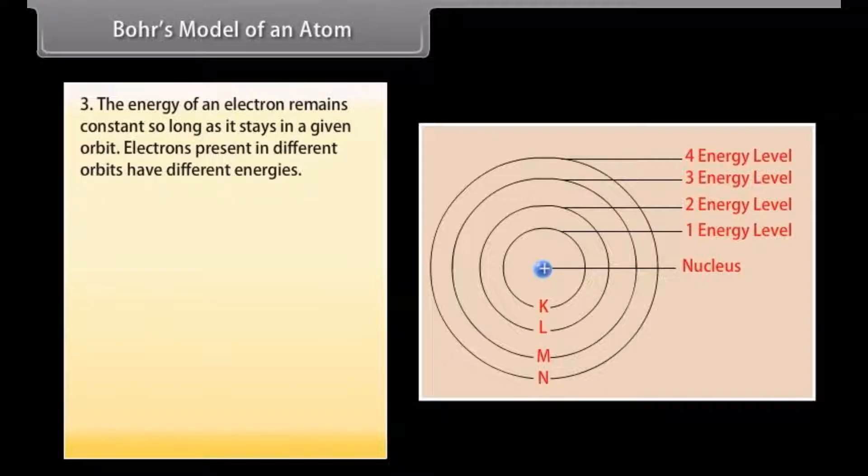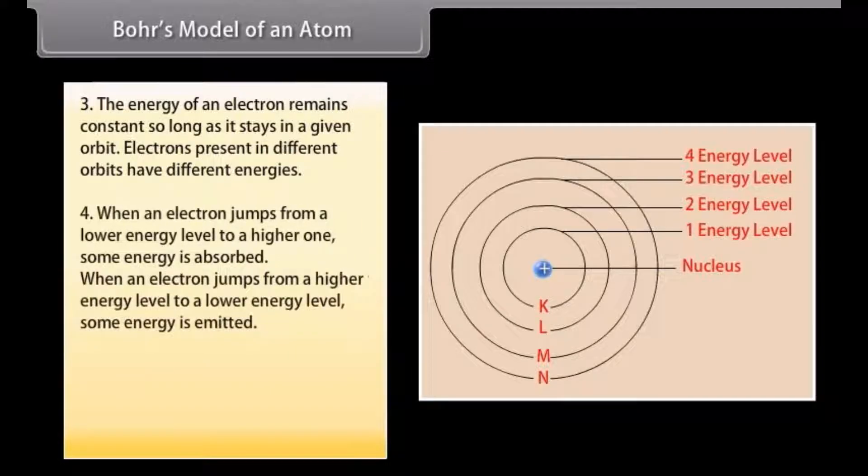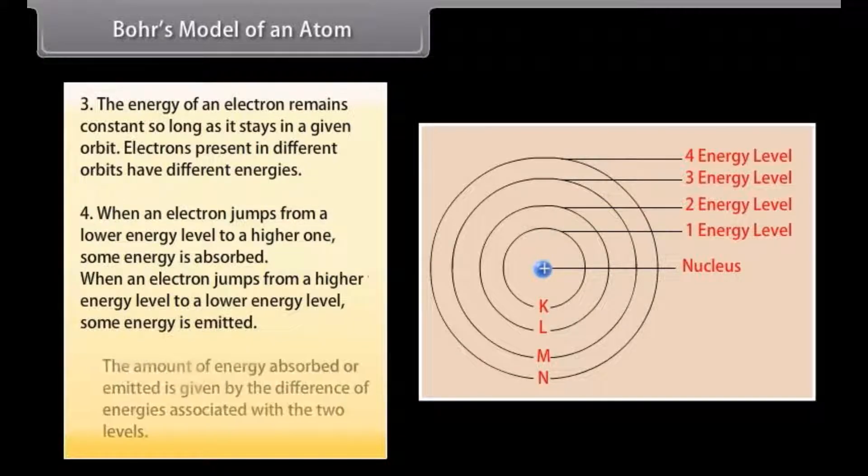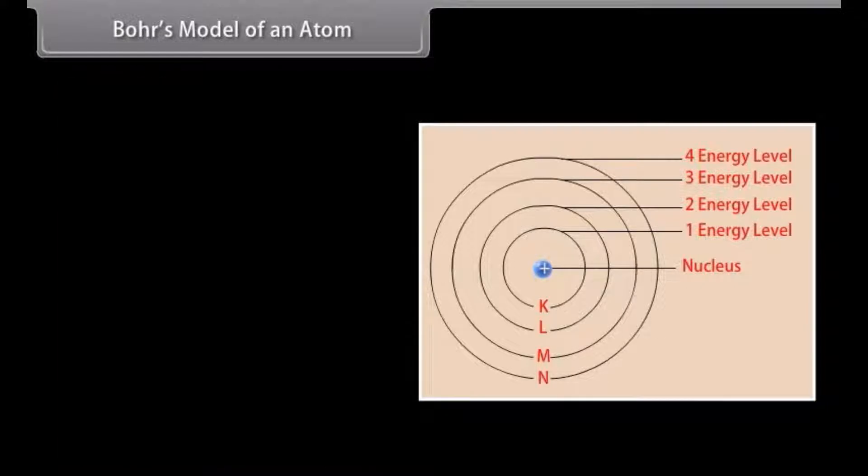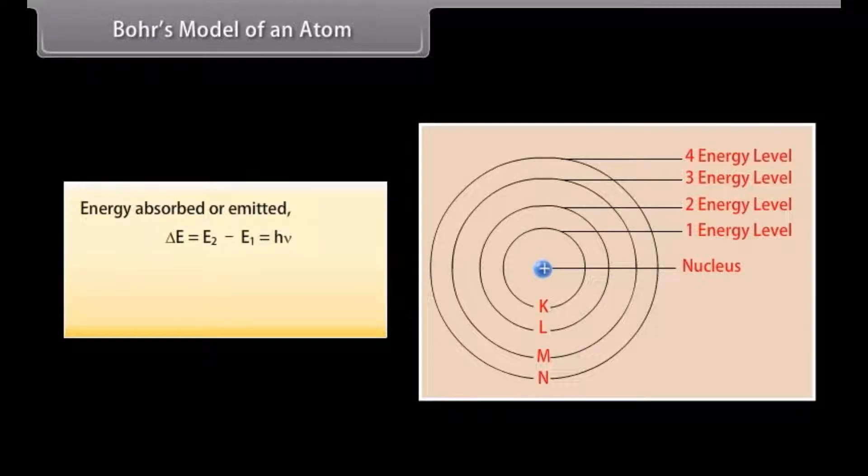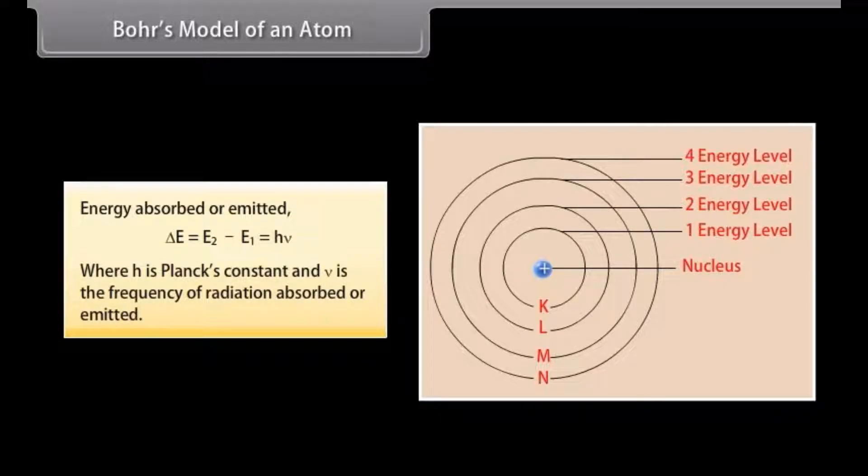The energy of an electron remains constant so long as it stays in a given orbit. Electrons present in different orbits have different energies. When an electron jumps from a lower energy level to a higher one, some energy is absorbed. When an electron jumps from a higher energy level to a lower energy level, some energy is emitted. The amount of energy absorbed or emitted is given by the difference of energies associated with the two levels. Energy absorbed or emitted, delta E is equal to E2 minus E1, which equals H nu, where H is Planck's constant, and nu is the frequency of radiation absorbed or emitted.